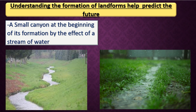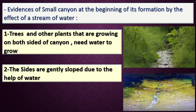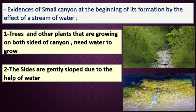What are the evidence of a small canyon at the beginning of its formation? Number one: if the water is still running on the land for a long time and didn't dry up, this water may be suitable for growing plants and trees. The land may contain seeds, so plants and trees will grow on both sides of the water. That is evidence of a small canyon at the beginning of its formation.